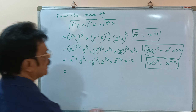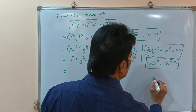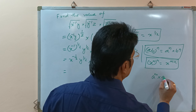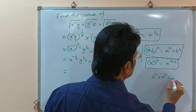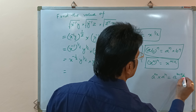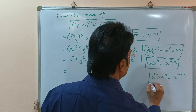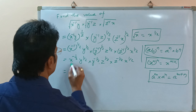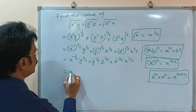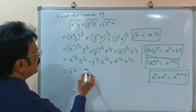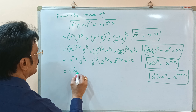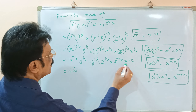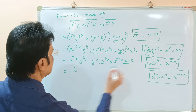Now we know that a to the power m into a to the power n is equal to a to the power m plus n. This is the formula. We can apply this formula here, so it will be x to the power minus half into x to the power plus half.